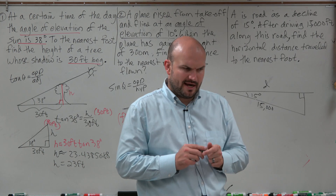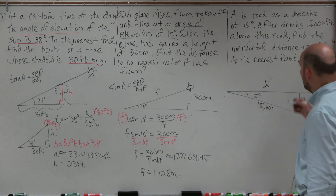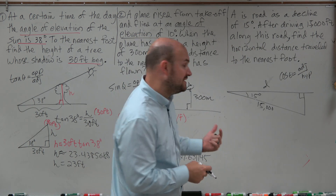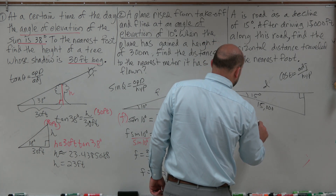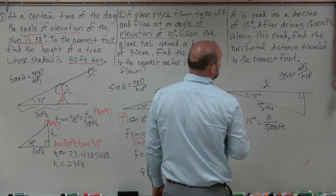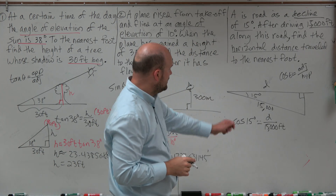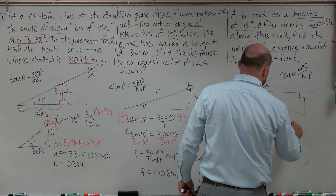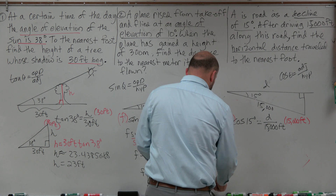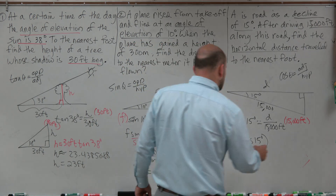We have 15 degrees, the hypotenuse, and the adjacent side — that's the cosine function. Cosine of an angle equals adjacent over hypotenuse. So cosine of 15 degrees equals d over 15,000 feet. To solve for d, multiply both sides by 15,000 feet. So d equals cosine of 15 degrees times 15,000 — make sure to put cosine 15 in parentheses when typing it into the calculator, then multiply by 15,000.